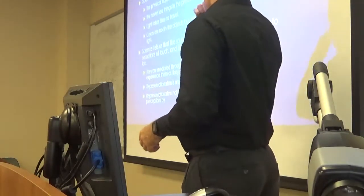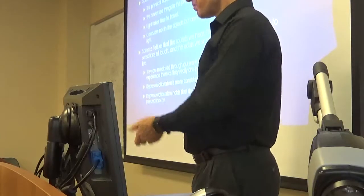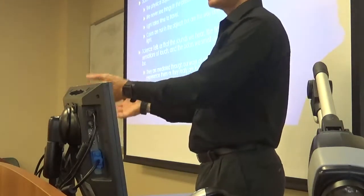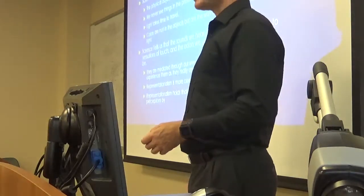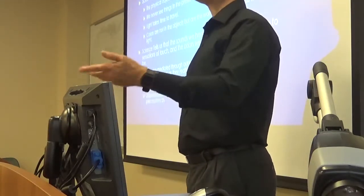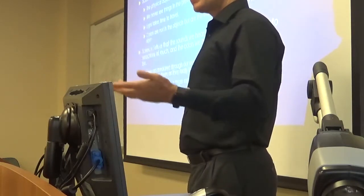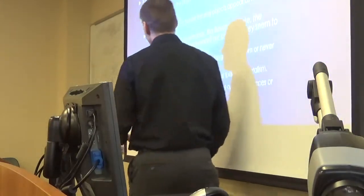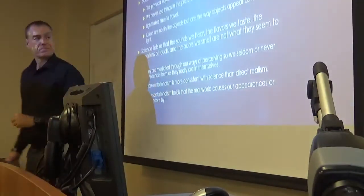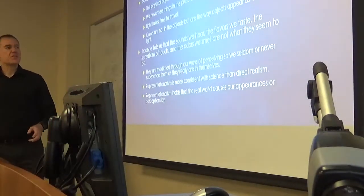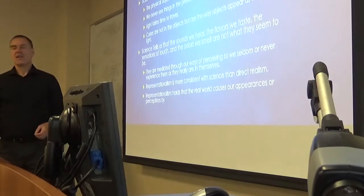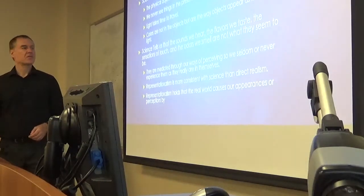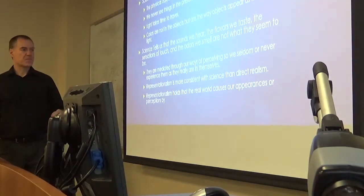We know this because people who are color blind don't see the same color as other people. And we know that certain physiological conditions, such as diseases like jaundice, can affect color vision. So, as science tells us, the sound that we hear isn't what's out there. The flavors we seem to taste are not out there. The things we seem to touch are not out there. What we seem to smell is not there either.